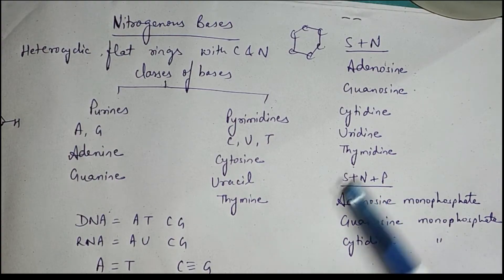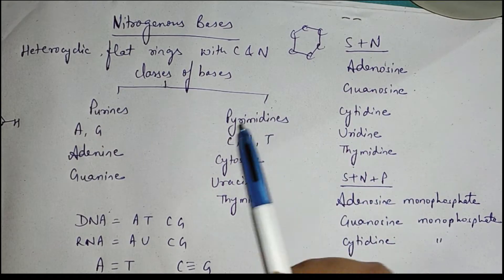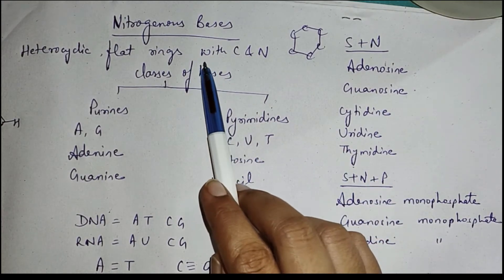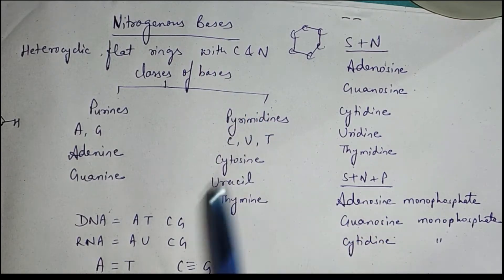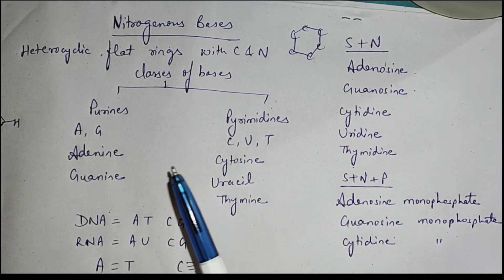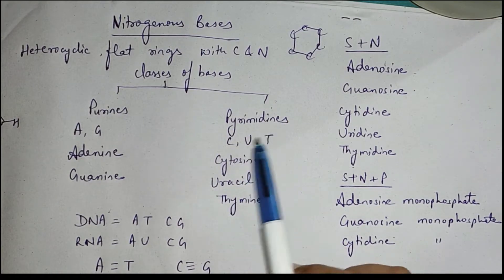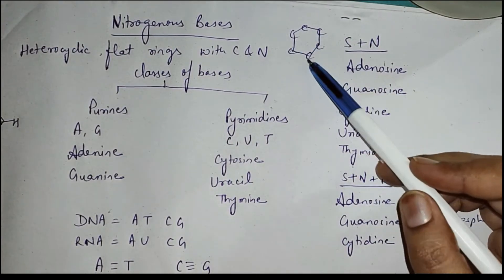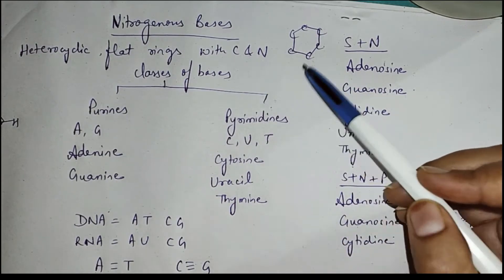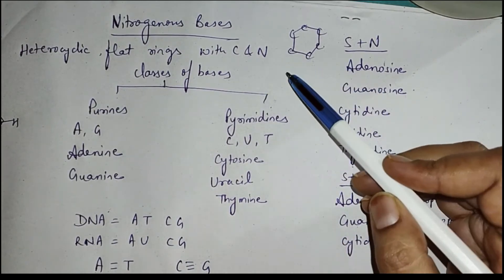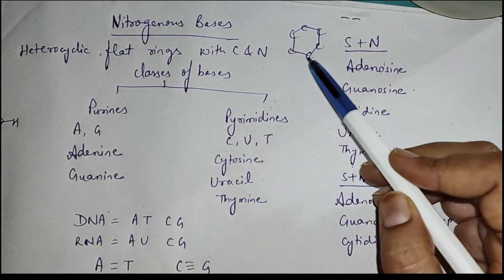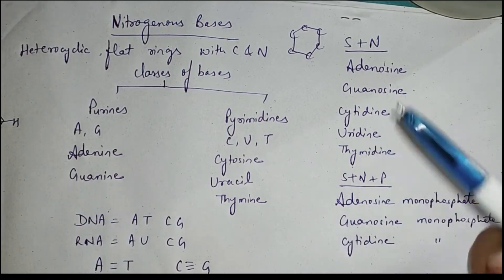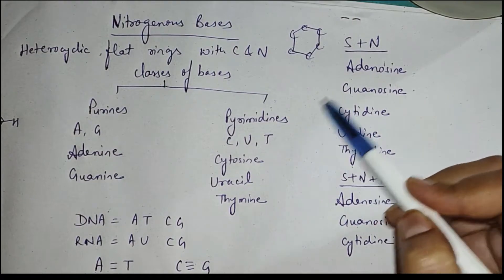Now let us talk about the third component of a nucleotide, that is N, that is nitrogenous bases. We have used the terms SNP for a nucleotide. So N stands for nitrogenous bases or nucleobases. These are aromatic heterocyclic flat rings with carbon and nitrogen. These are aromatic compounds, and normally an aromatic compound contains carbon atoms in its main ring, but nitrogenous bases can have nitrogen also along with carbon.